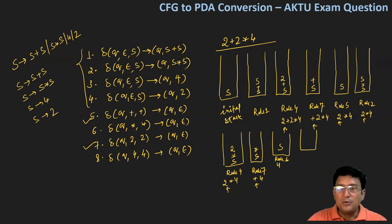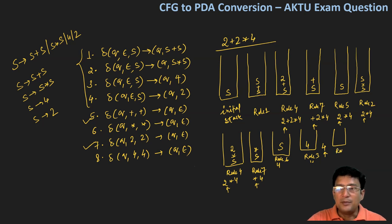Stack का top S है, without seeing the input इसको change करना है. Rule number 3 apply करेंगे: S produces 4, so S को 4 से replace करते हैं. Input में भी 4 है और stack के top पे भी 4 है. Rule number 8 apply करेंगे, pop करने के बाद stack empty हो जाएगा. चूँकि stack empty हो गई इसलिए string accepted by PDA. This acceptance is by the empty stack.